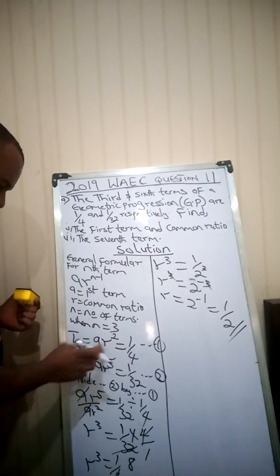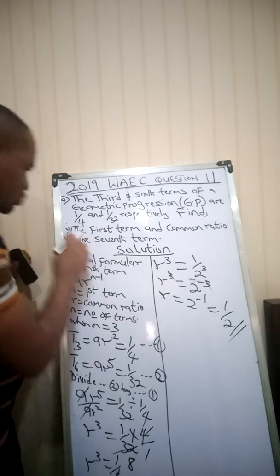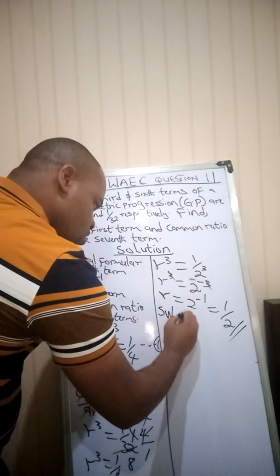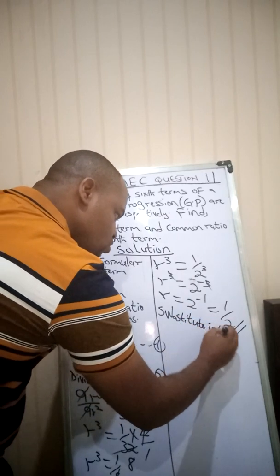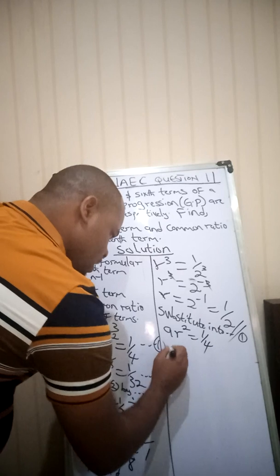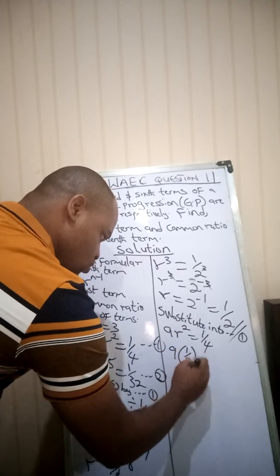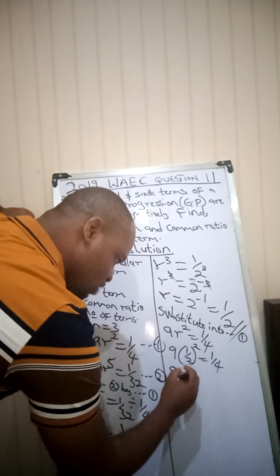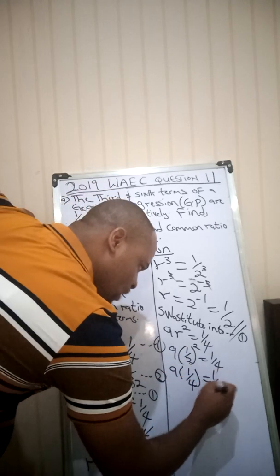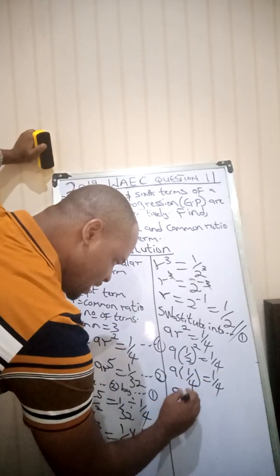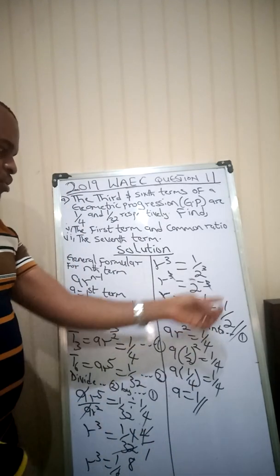Now substitute r = 1/2 into equation 1 to get the value of a, since our first question asks for the first term and common ratio. Equation 1 says ar² = 1/4. So a × (1/2)² = 1/4. Since (1/2)² = 1/4, we have a × 1/4 = 1/4. Dividing both sides by 1/4 gives a = 1.